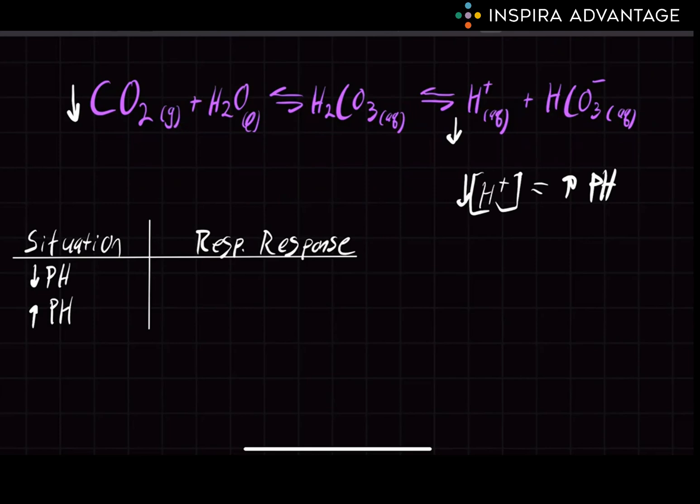Now, please take a moment to think about how the respiratory system will try to counteract a high blood pH. You're right. It'll decrease respiration. So let's fill that in our table here. How about if the pH is low? What will the lungs do to try and fix this? Right. We kind of talked about this one. We're going to increase respiration to blow off CO2.